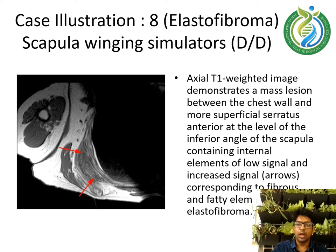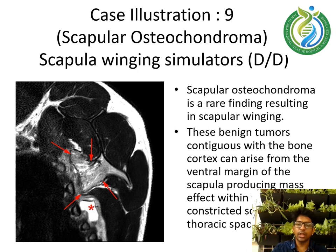Case illustration 8 — Scapular Winging Simulators: Differential Diagnosis. An axial T1-weighted image demonstrates a mass lesion between the chest wall and the more superficial serratus anterior at the level of the inferior angle of the scapula, containing internal elements of low signal and increased signal corresponding to fibrous and fatty elements of an elastofibroma.